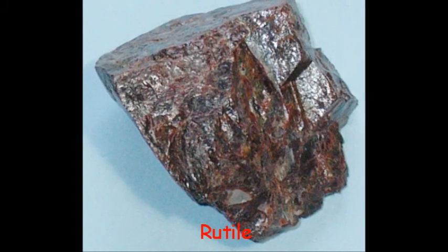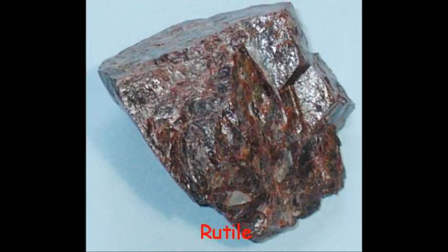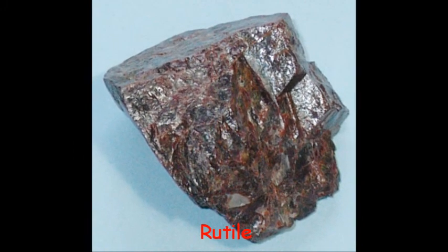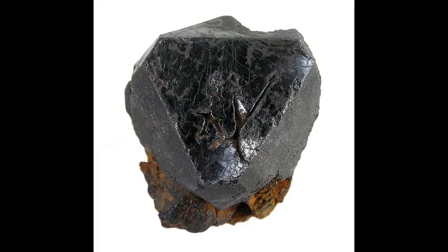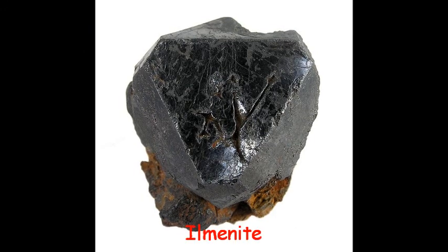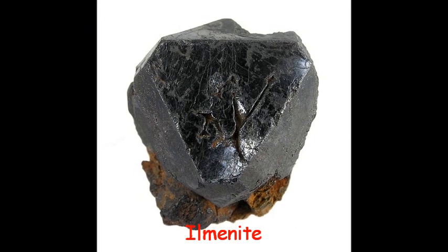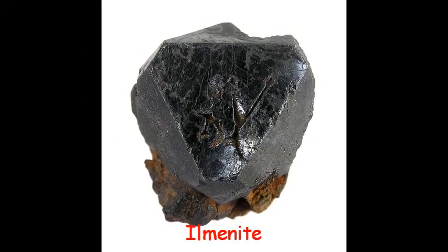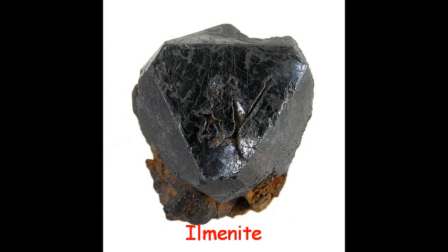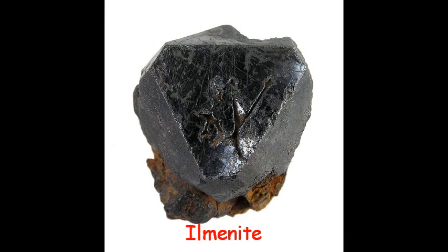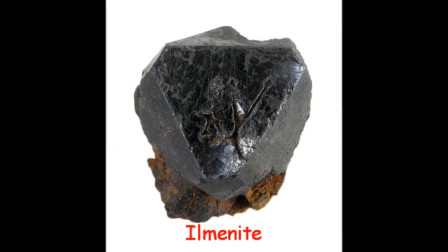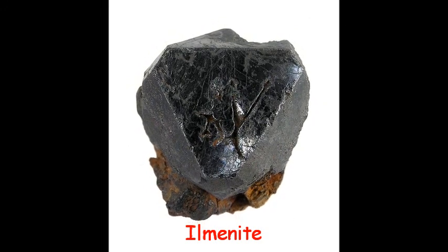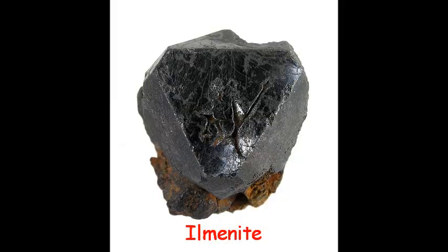In nature, titanium exists in two bonds: titanium dioxide (rutile) and in an iron oxide, Ilmenite. They are the two main materials that contain titanium. Rutile and Ilmenite make up 24% of the Earth's crust. This makes titanium the ninth most abundant element on the planet.